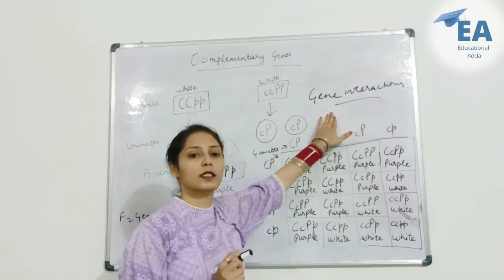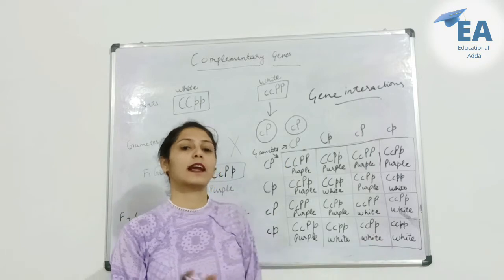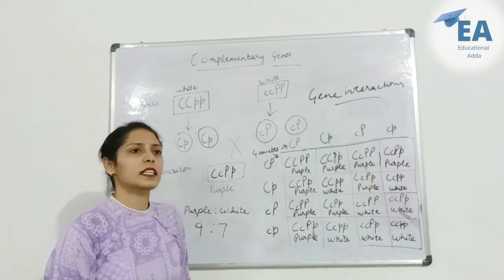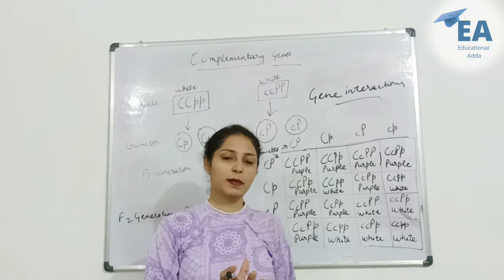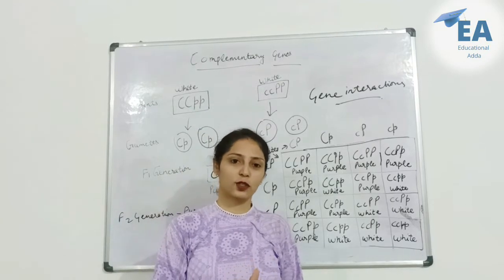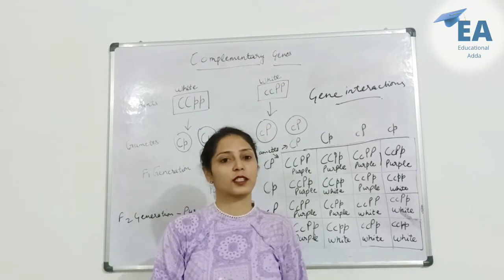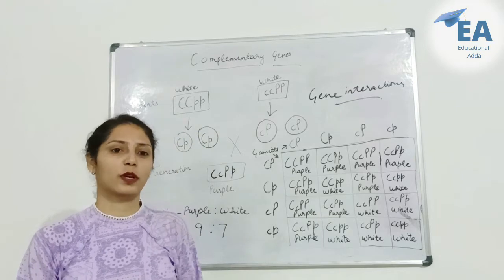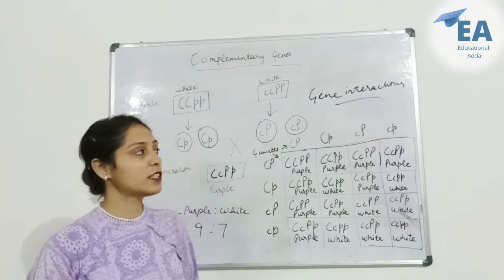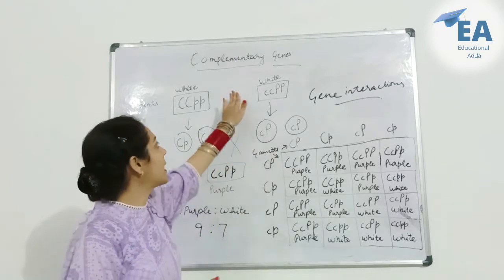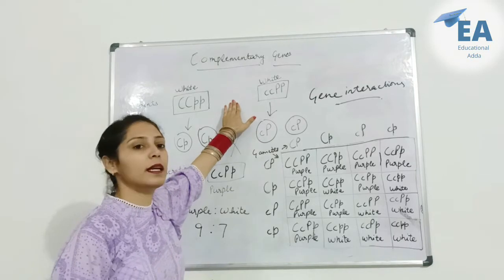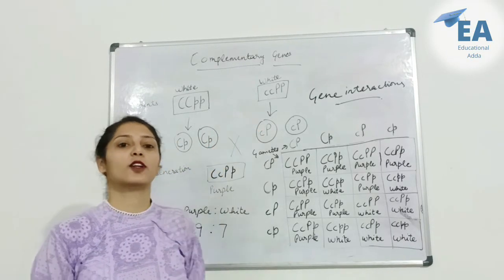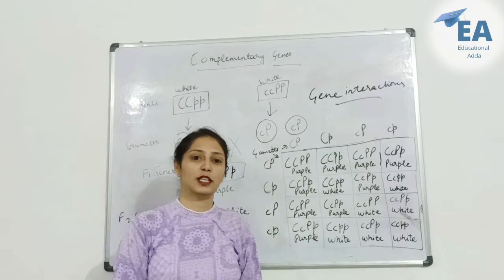There are two types of gene interactions: allelic gene interactions and non-allelic gene interactions. Our topic — complementary and supplementary genes — comes under non-allelic gene interactions.